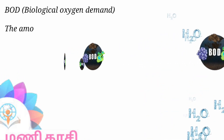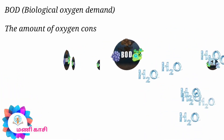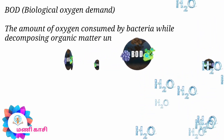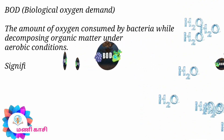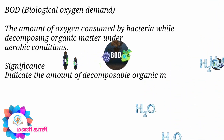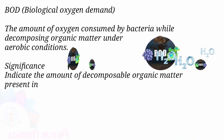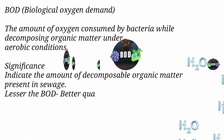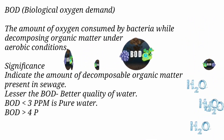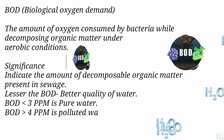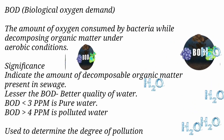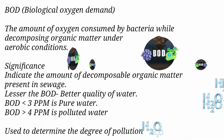BOD is the amount of oxygen consumed by bacteria while decomposing organic matter under aerobic conditions. Significance: it indicates the amount of decomposable organic matter present in sewage. Lesser the BOD, better the quality of water. BOD less than 3 ppm indicates pure water, while BOD greater than 4 ppm indicates polluted water. It is used to determine the degree of pollution.